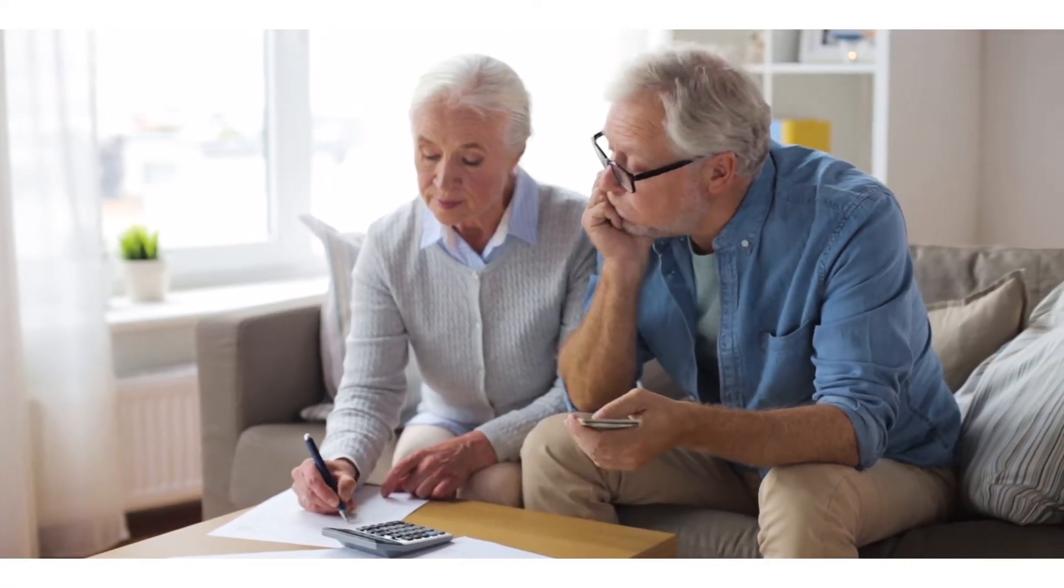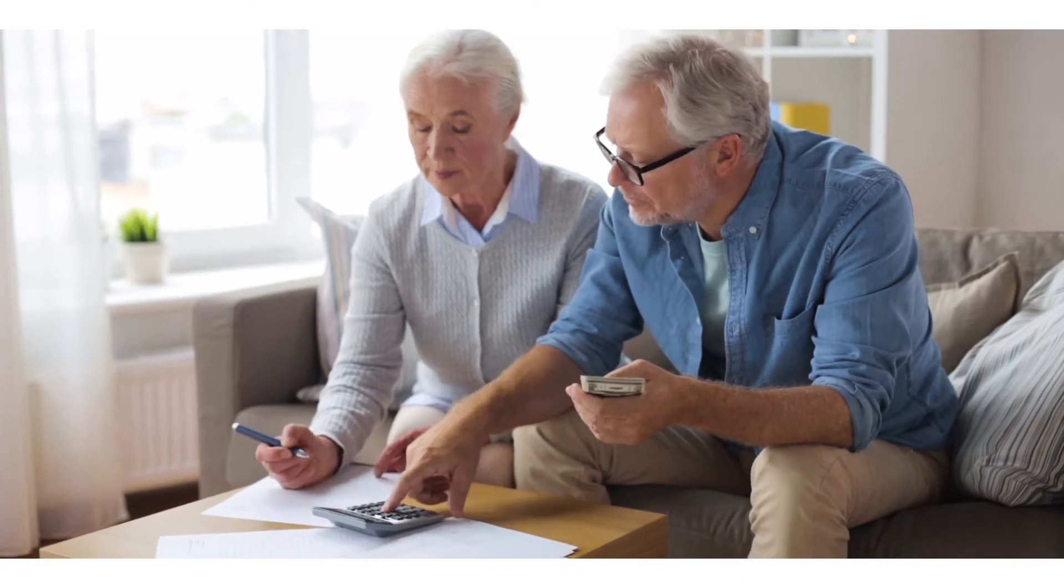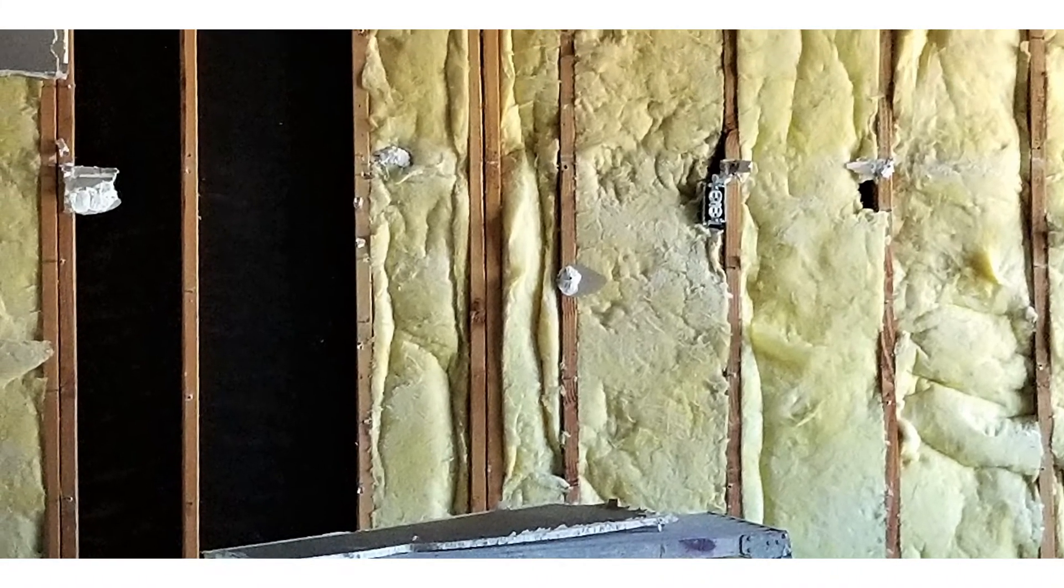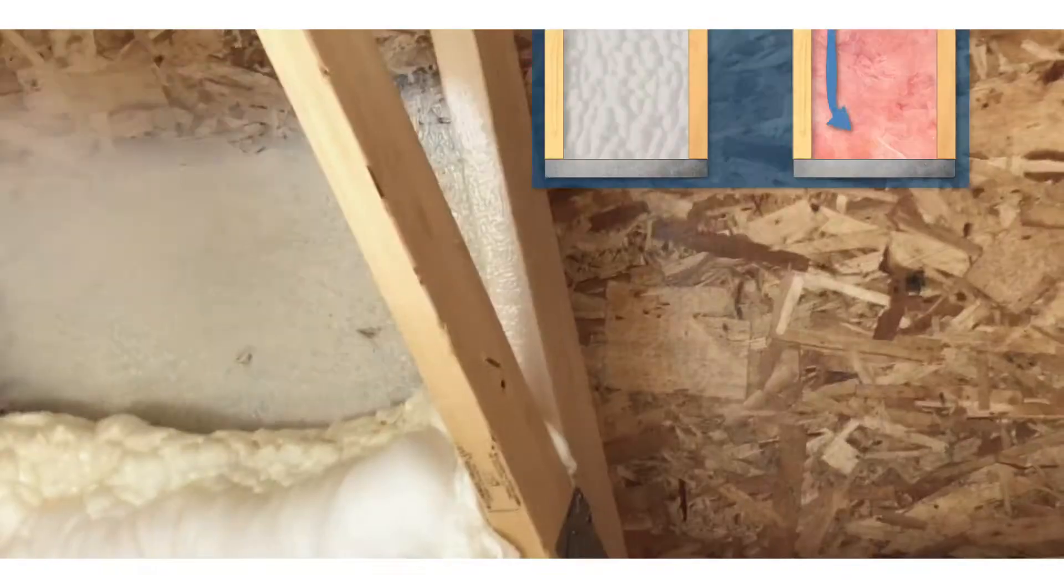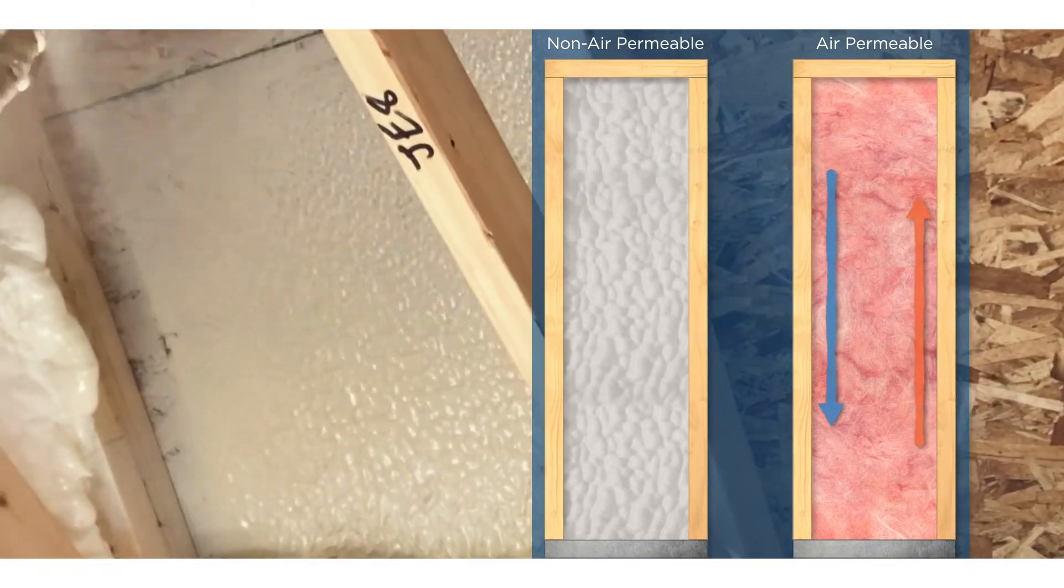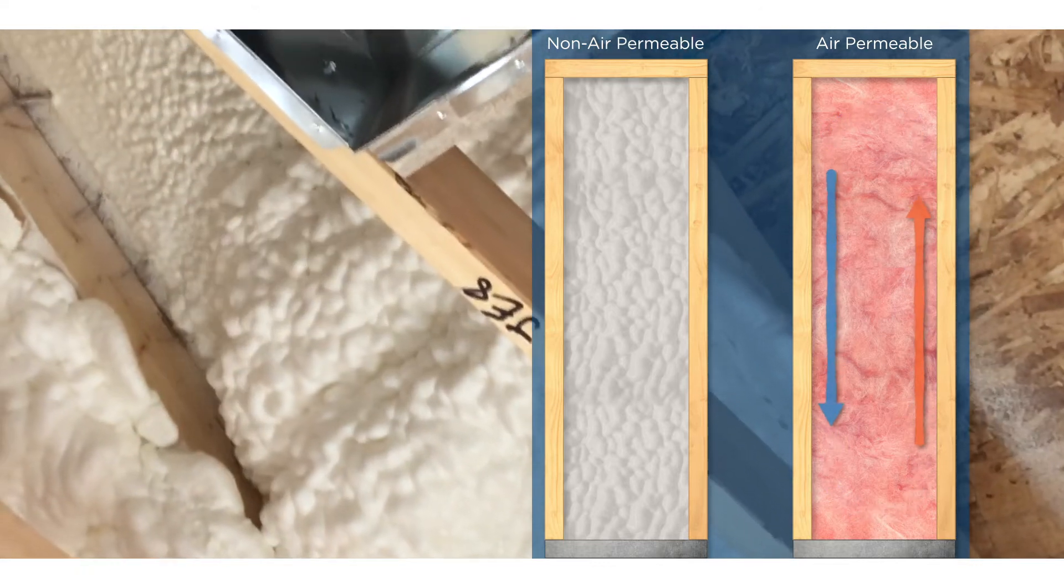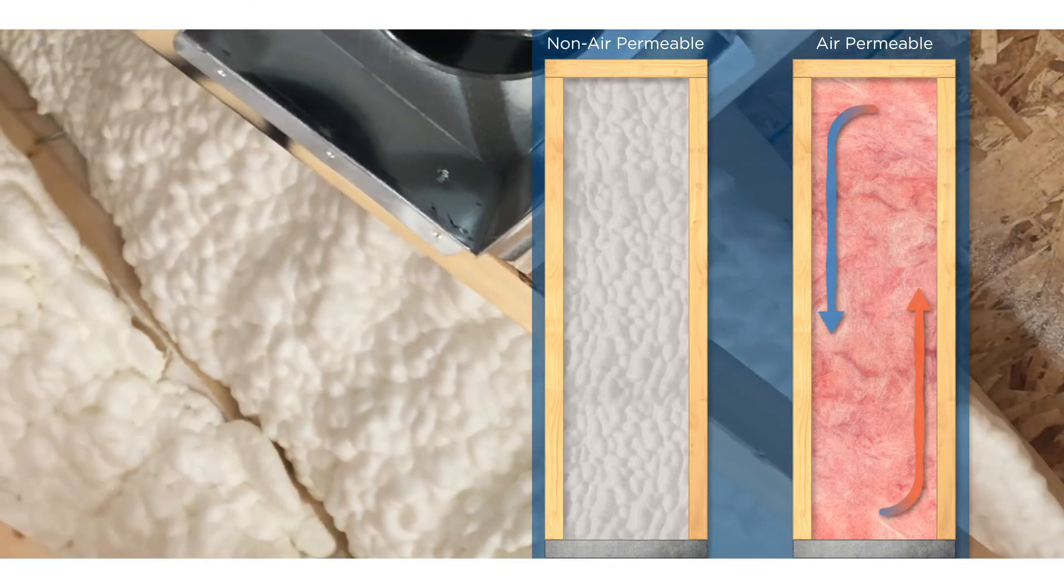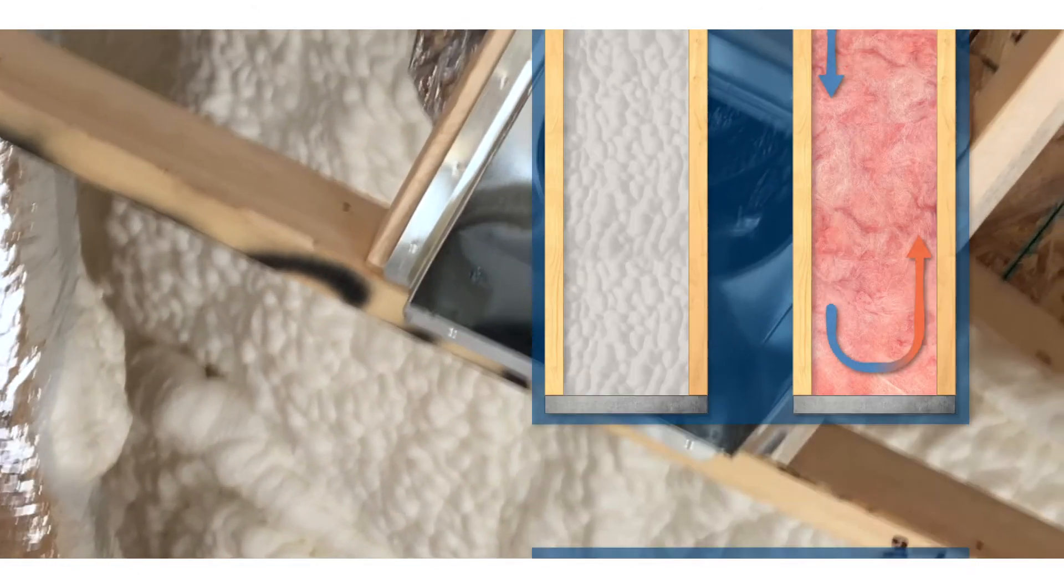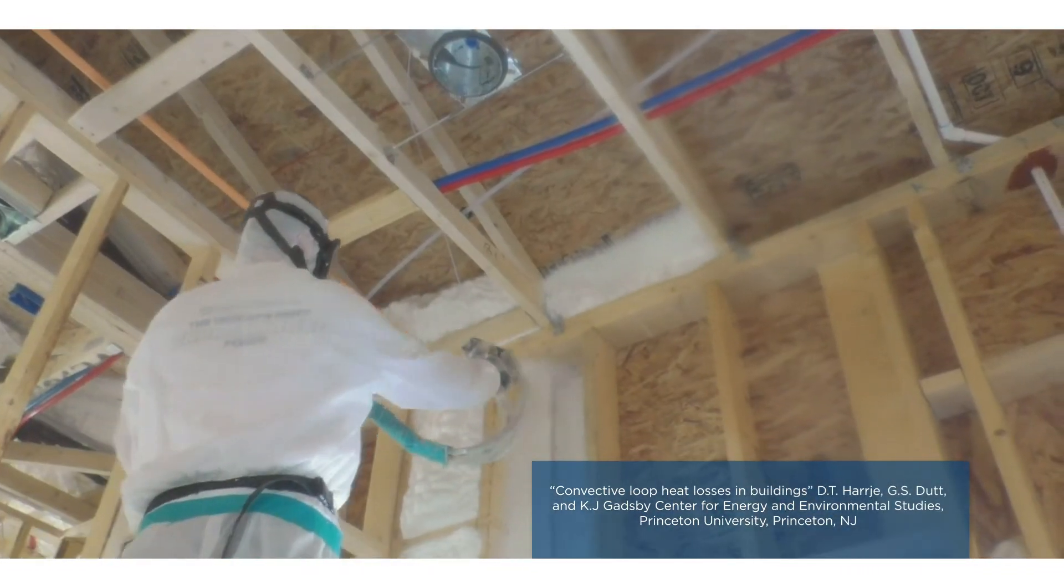Air leakage can also increase the occurrence of convective looping, particularly in air permeable insulation materials. Convective looping occurs inside of a wall where warm air cycles upward in the cavity, then cools and falls back down the cavity, repeating the process. This can account for nearly a 15% temperature loss in a house.